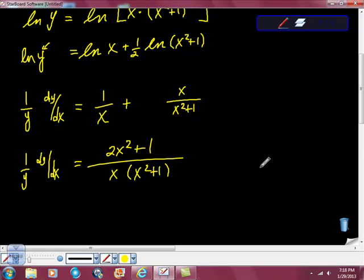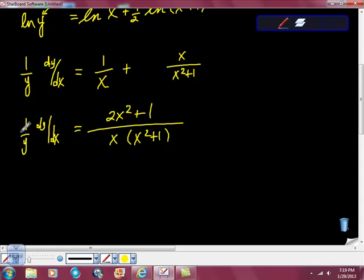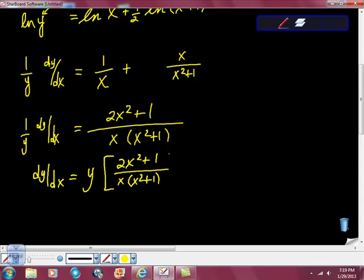Now what I'm going to do might be a little bit weird, but I think you'll get the first part. We want to get dy/dx by itself, because that's our job. We have this 1/y, so we're going to multiply both sides by y. If I multiply 1/y by y, we get y/y, which is 1, and 1 times dy/dx is dy/dx. This whole side is multiplied by y, and we have (2x² + 1)/[x(x² + 1)].